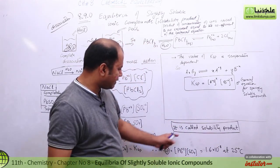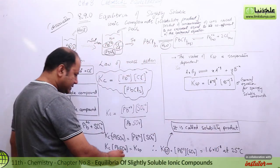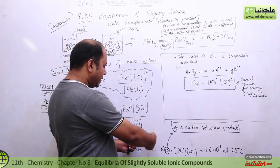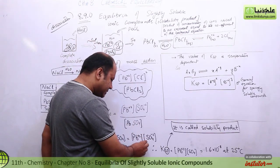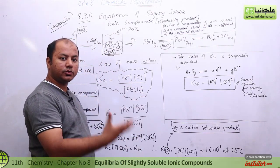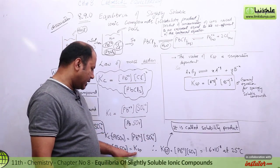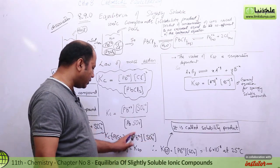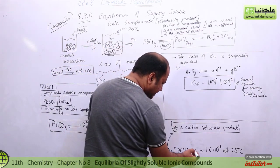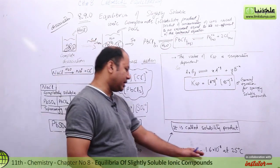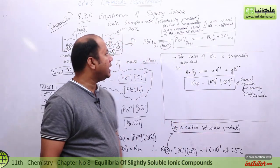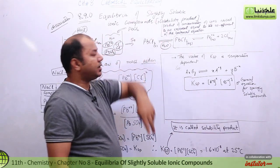This is called the solubility product, written as Ksp. The solubility product means: all the ions that dissociate in solution — you take their product. So Ksp for lead sulfate equals the concentration of lead ions multiplied by the concentration of sulfate ions. For lead sulfate, the Ksp value is 1.6 × 10⁻⁸.